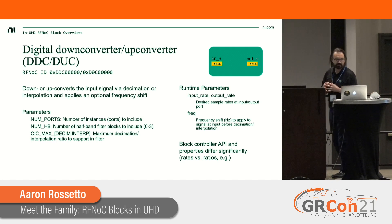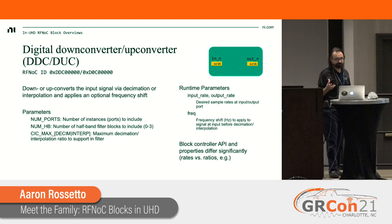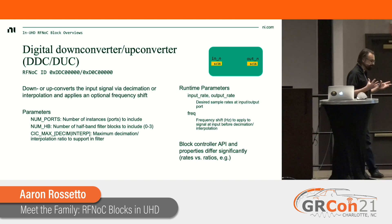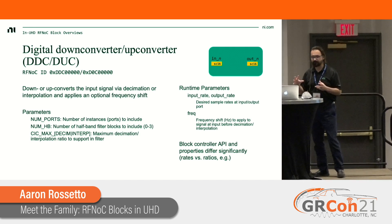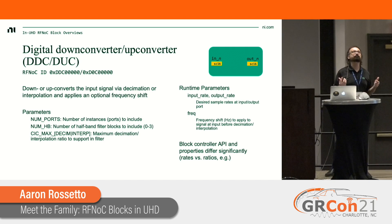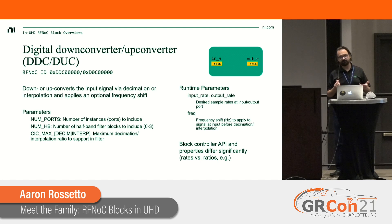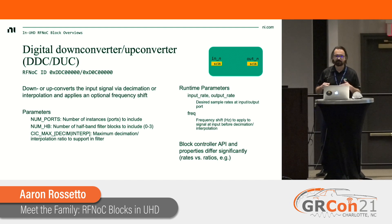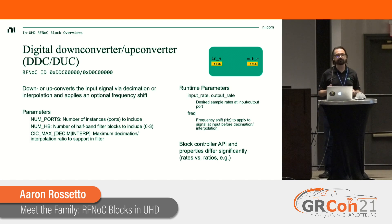The digital down converter and digital up converter are part of every default RFNoC image following the radio block. They let you set the input rate and output rate. Via the property mechanism, the ratio property is exposed separately, so you can set it directly, or you can set the input rate and output rate and it will compute and set the ratio automatically.